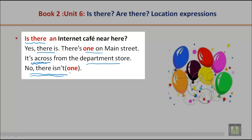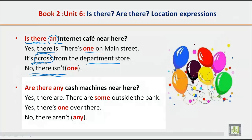We use 'is there' for singular. Remember, we use 'an' before a vowel sound, so: Is there an internet cafe near here? Yes, there is — there is one on Main Street. It's across from the department store, meaning on the other side. If there is no internet cafe, you say: No, there isn't. Now let's practice 'are there'.